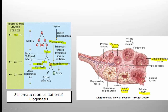The secondary oocyte also undergoes unequal division and gives rise to the female gamete egg and a second polar body. From the first polar body, two more polar bodies are also produced. So at the end of oogenesis, totally three polar bodies and one egg are produced.